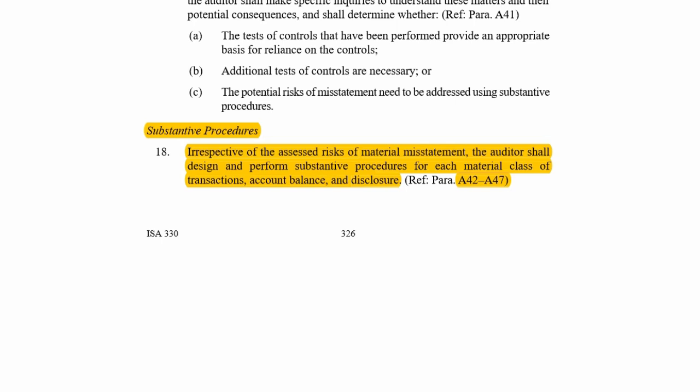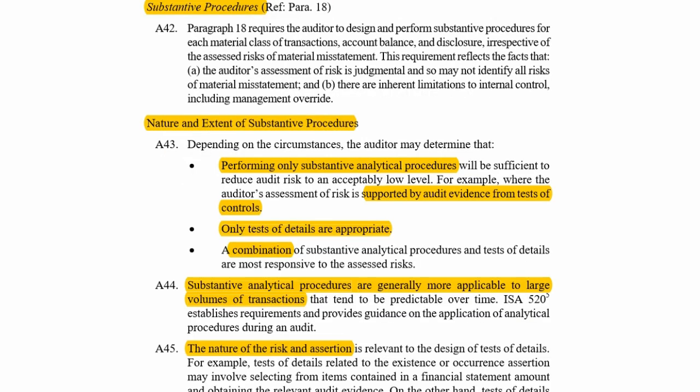Whether a combined or substantive approach has been chosen, here are the details for substantive procedures. You must perform substantive procedures for a material class of transaction or account balance (A42 to A47). In determining the nature of substantive procedures, you could perform analytical procedures provided they are supported by tests of controls. If doing a purely substantive approach, you will have to do tests of detail or a combination of both. You cannot choose to do only analytical procedures under a substantive approach; analytical procedures alone are not sufficient — they must accompany substantive tests of detail or tests of controls.